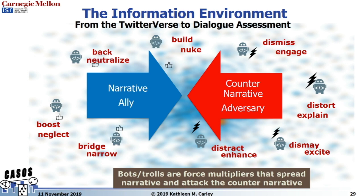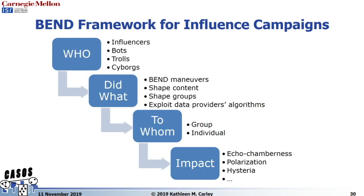We study these things with an approach called BEND — four B's, four E's, four N's, and four D's, representing 16 different kinds of information maneuvers. Eight affect the narrative or counter-narrative, and eight affect the community — allies and adversaries in the group. The BEND framework asks: who is conducting the campaign (a bot, cyborg, news agency, government actor, or organization?), what maneuvers are they doing (building a group, bridging, nuking, creating excitement or dismay?), who are they affecting (individual or group?), and what is the impact?